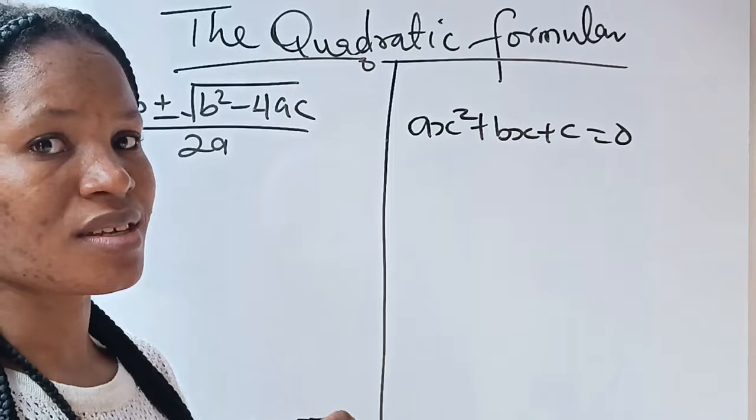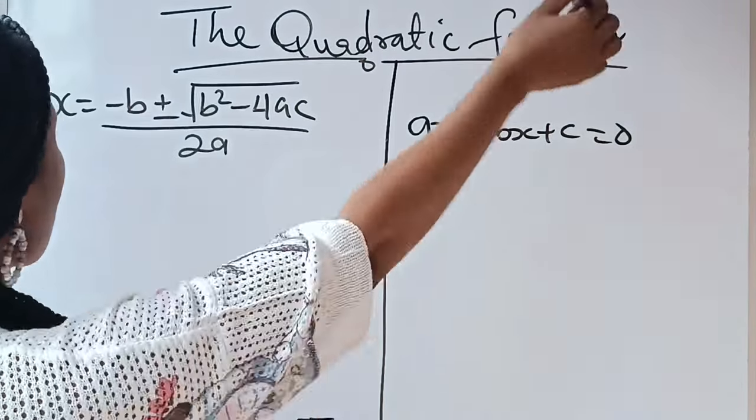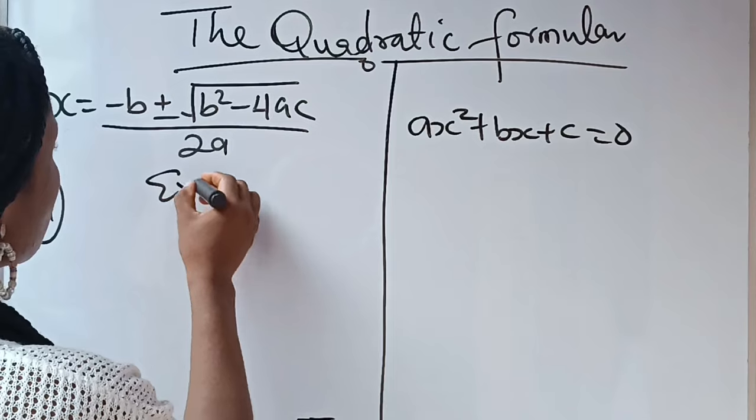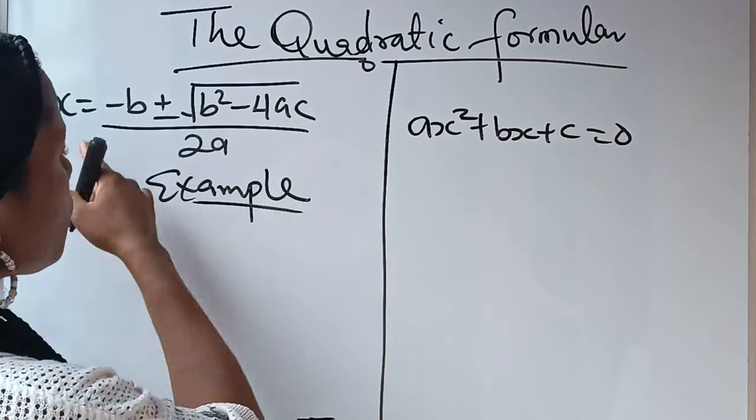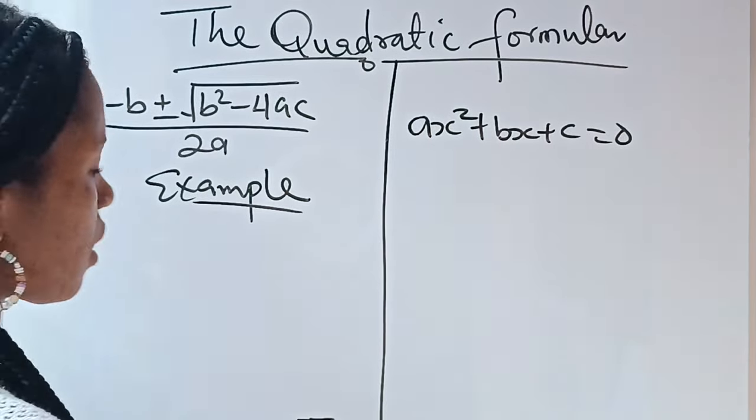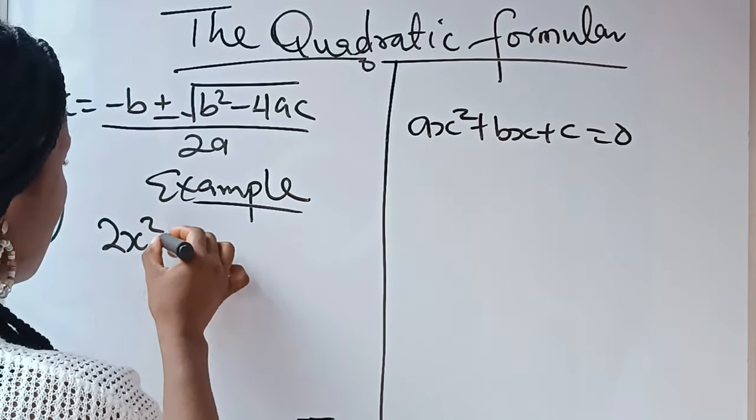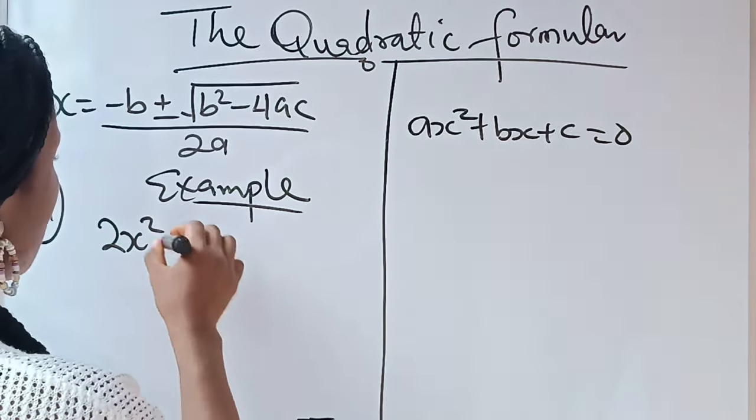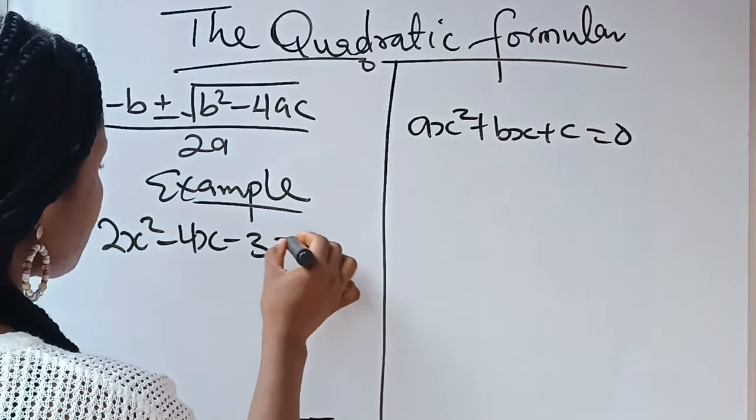Let's start with an example. I think this is going to drive this home. For example, you are asked to solve this equation using the quadratic formula. Here, 2x² - 4x - 3 = 0.